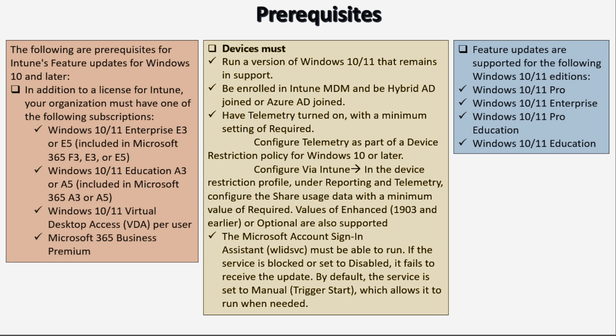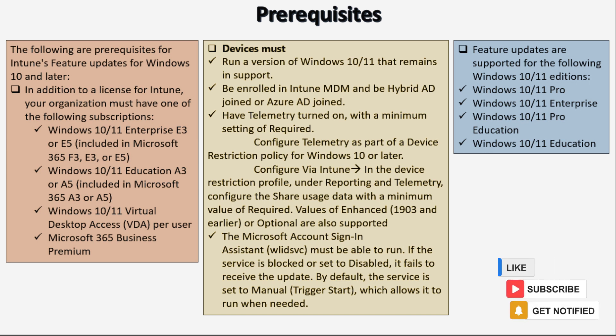We can configure the telemetry data as part of device restriction policies for Windows 10 or later. To configure the telemetry data, we have to create a device restriction policy under Reporting and Telemetry configuration, and we have to select the Share User's Data setting with a minimum value of required.